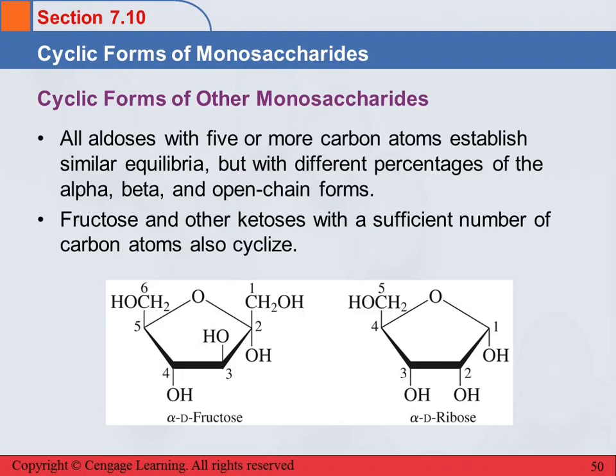Glucose is obviously not the only one that does this. All aldoses that have five or more carbon atoms do a similar equilibrium, but they're going to have different percentages of the alpha, beta, and open chain forms than glucose does. I don't expect you to remember those percentages — just know that it is mostly present in the cyclic form and that the alpha and beta forms are probably not equal. Generally, one form predominates over the other.